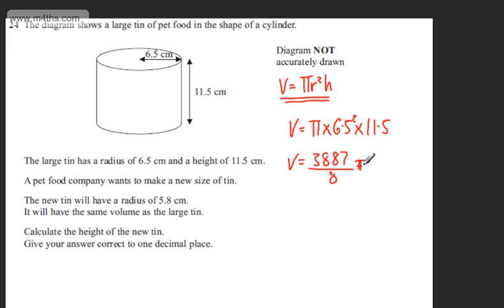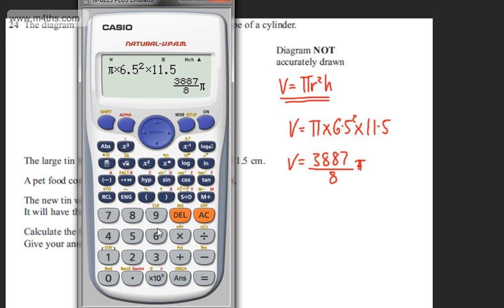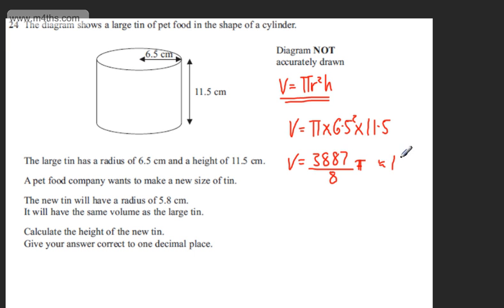So this now is an exact value. If you want a decimal answer now to store in the calculator we have got 1526. So let's put this here which is approximately equal to 1526 dot dot dot. I'm going to use this exact value.